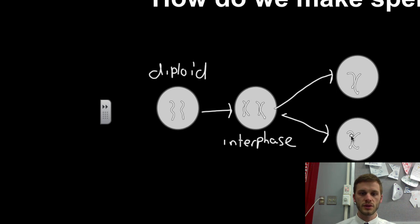This is what happens right here in meiosis I. So really, PMAT is happening: prophase, metaphase, anaphase, telophase, and we get two chromosomes in each cell.